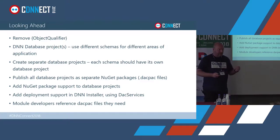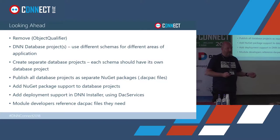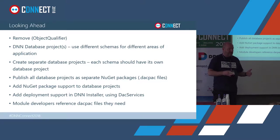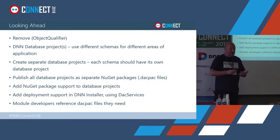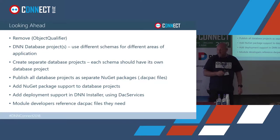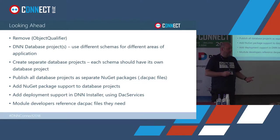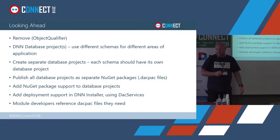I'd like to have one database project per schema. If you do the separation, also do it at the database project level — each schema should ideally have its own database project. Then you could publish all the different core database projects as NuGet packages, and if someone wants to use them they just reference the NuGet package. Though those module databases will grow with the size of those referenced projects.